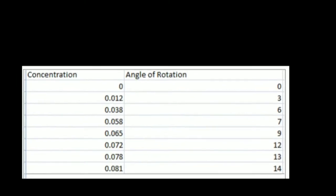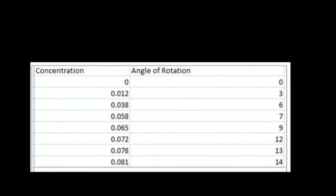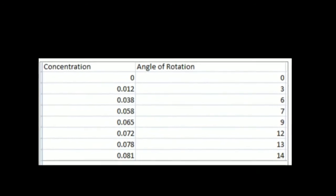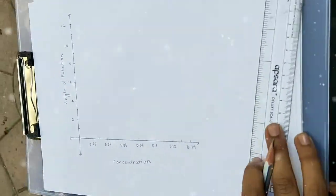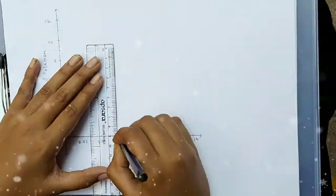The concentration of solution can be calculated by dividing the mass of glucose by the volume of the water. Now, let's move to the next step of plotting graph and interpreting the result.